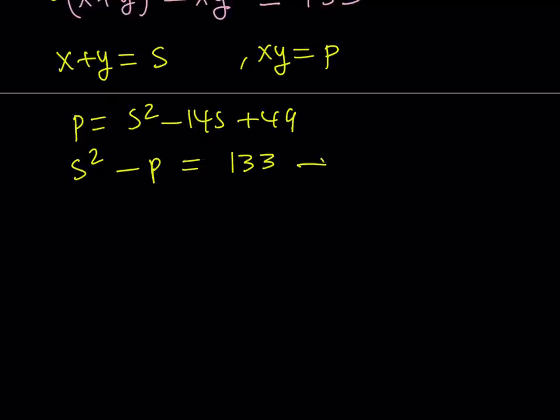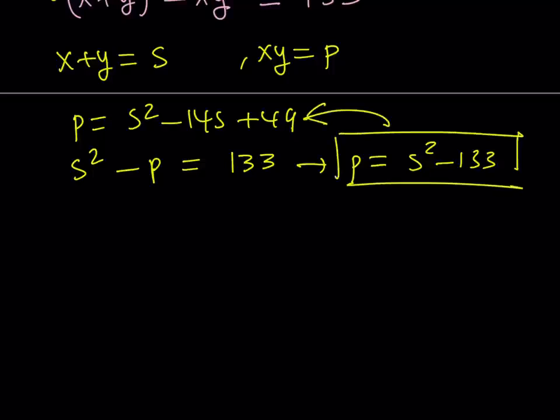So let's go ahead and isolate the p from the second one. This is what p equals from the second equation, and I'm going to substitute that into the first equation. Let's go ahead and do that now. So if we do that, we're going to get s squared minus 133, that replaces p here, equals s squared minus 14s plus 49.